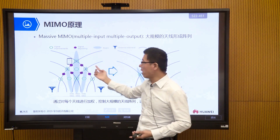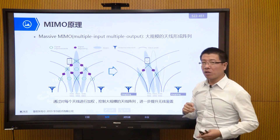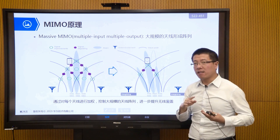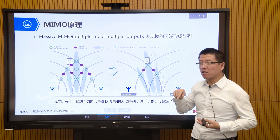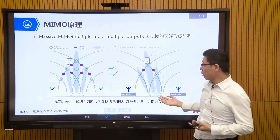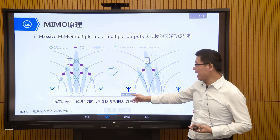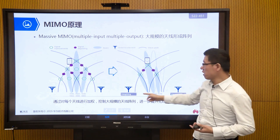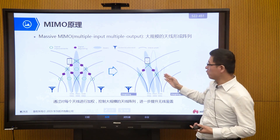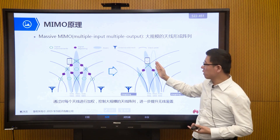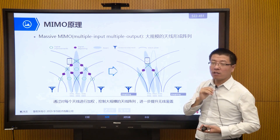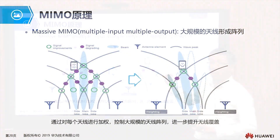Through these directional beams, we cover our users to get better coverage gain. At the same time, it can effectively reduce interference. By adjusting the weight of our transmitting antenna, we can let the beam follow the user to move, forming beam shaping. The benefit is improved coverage, increased capacity, and reduced interference. This is our massive MIMO — in the 5G network, it can effectively improve our capacity and speed.